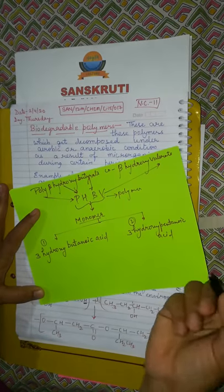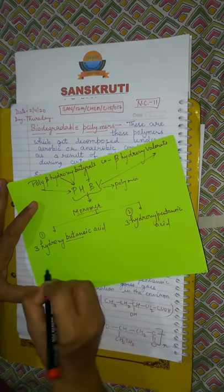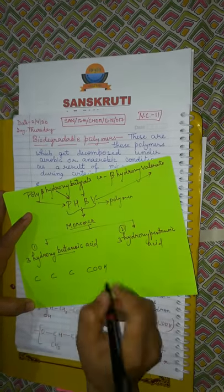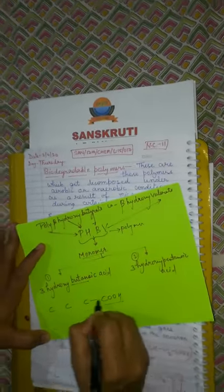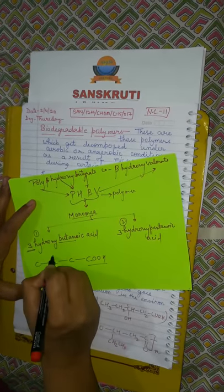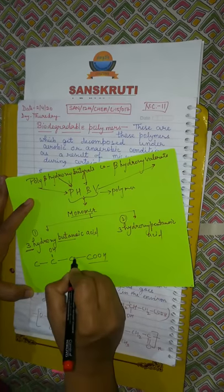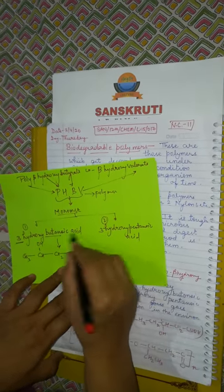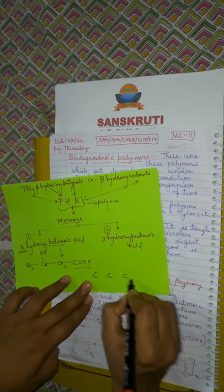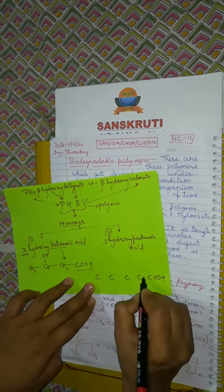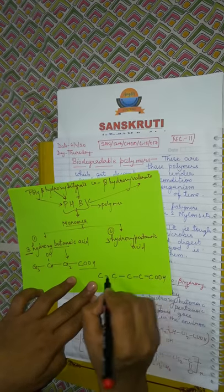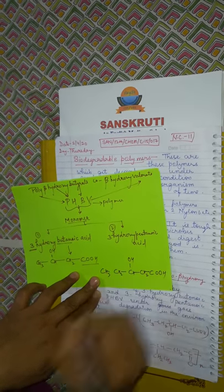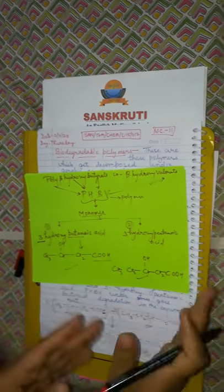Now let's draw the structures of both monomers. Butanoic means four carbons — draw the four-carbon chain. At the third carbon, add the hydroxy (OH) group. Similarly, for 3-hydroxypentanoic acid, draw the five-carbon chain with the OH group at the third carbon. Both monomer structures are now ready.